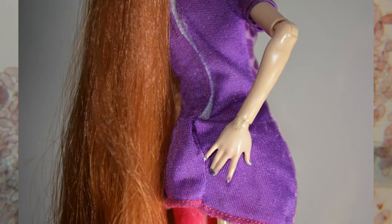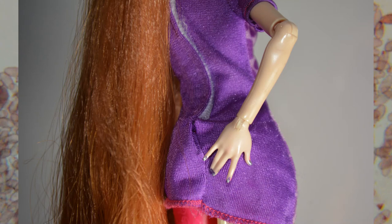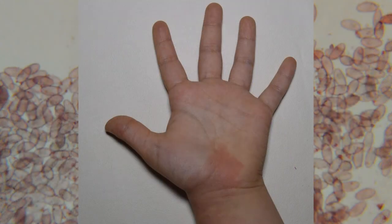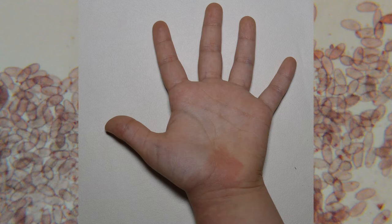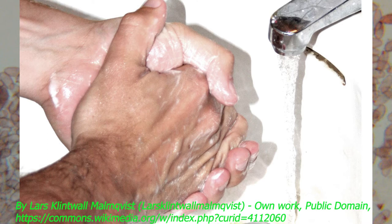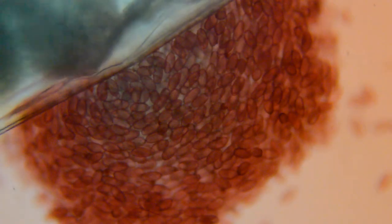The eggs cause an itchiness on your bottom and that makes you scratch. The eggs are sticky and if you touch them, they will stick to your fingers. Then if you don't wash your hands well, especially under the fingernails, the eggs will get on things you touch and into your mouth. They will then hatch and grow.